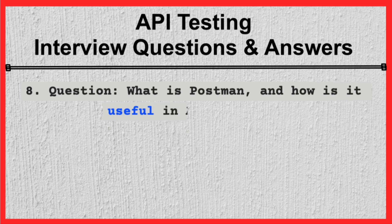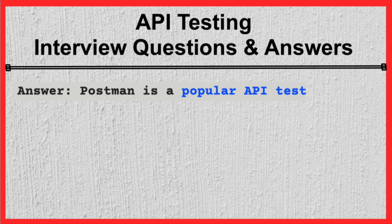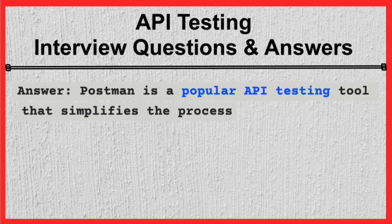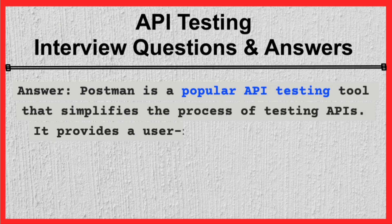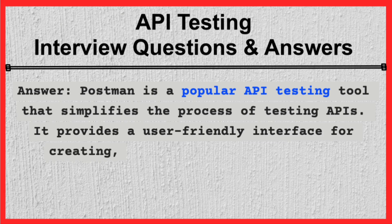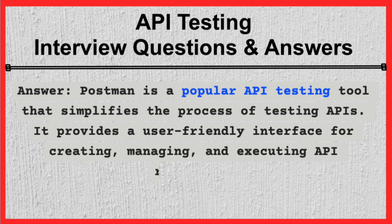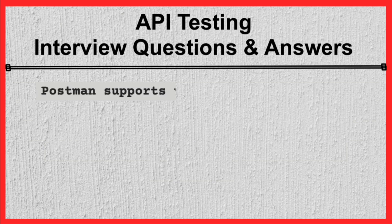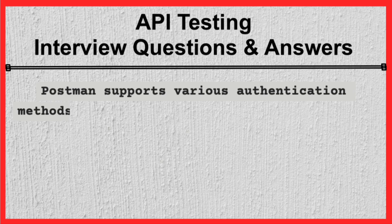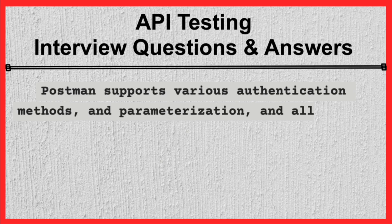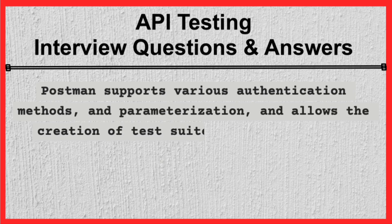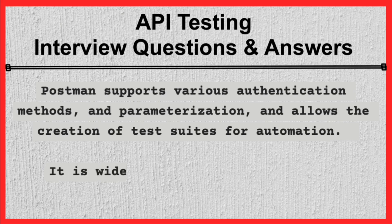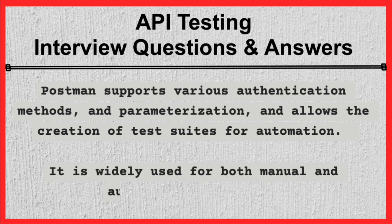Question 8. What is Postman, and how is it useful in API testing? Answer. Postman is a popular API testing tool that simplifies the process of testing APIs. It provides a user-friendly interface for creating, managing, and executing API requests. Postman supports various authentication methods and parameterization, and allows the creation of test suites for automation. It is widely used for both manual and automated API testing.